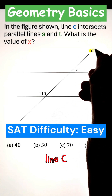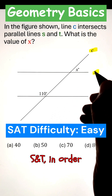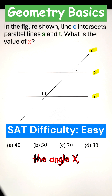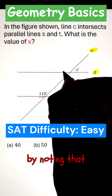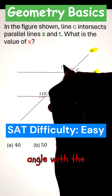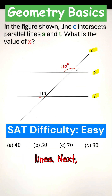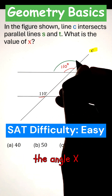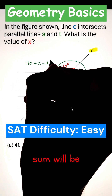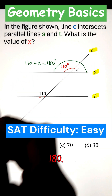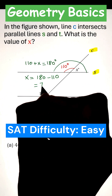For the given figure, if line C intersects parallel lines S and T, in order to figure out angle X, we can start by noting that line C will make the same angle with the intersecting parallel lines. Next, angle X and 110 degrees make a straight line, so their sum will be 180. Simplifying will give us the value of X.